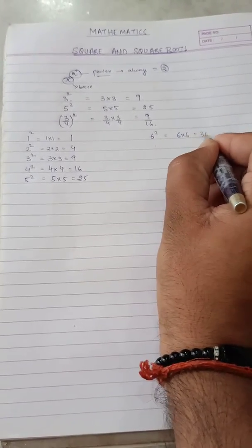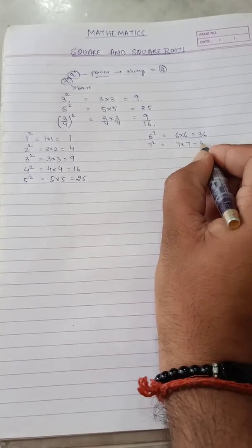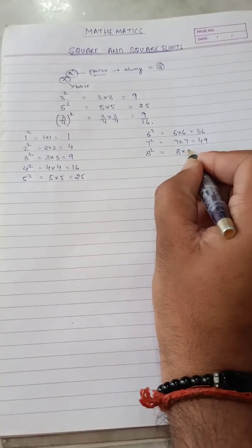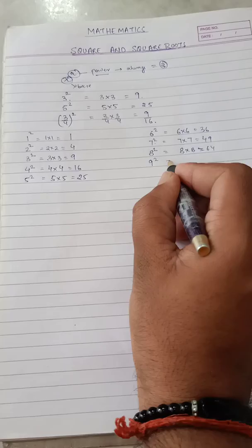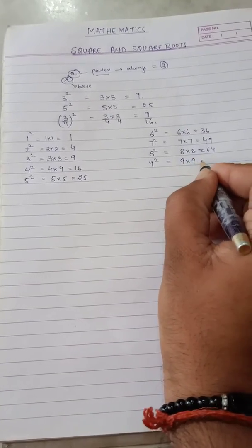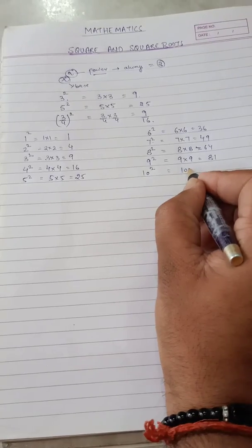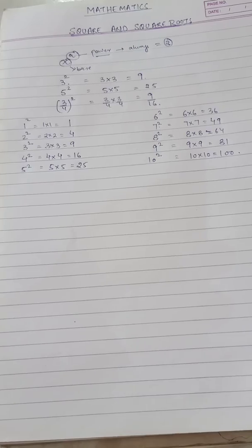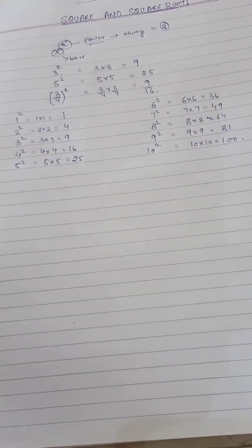6 square is 6 into 6 equals 36. 7 square is 7 into 7 equals 49. 8 square is 8 into 8 equals 64. 9 square is 9 into 9 equals 81. And the last is 10 square — 10 into 10 — that is 100. So these are the squares of the first ten natural numbers and you all must learn these numbers.